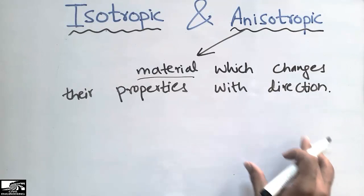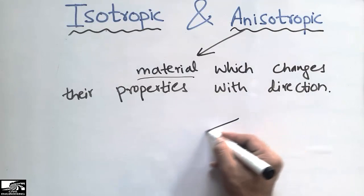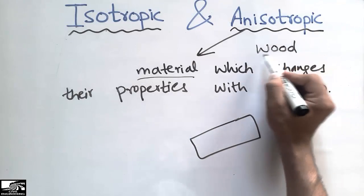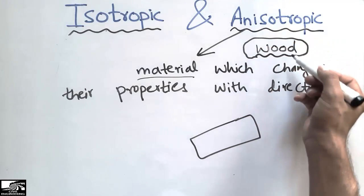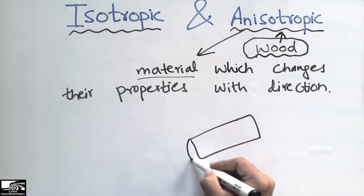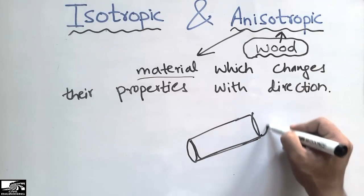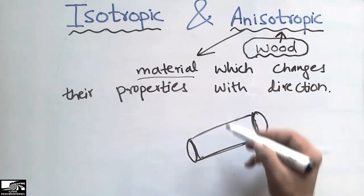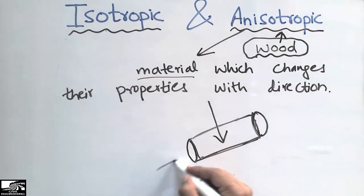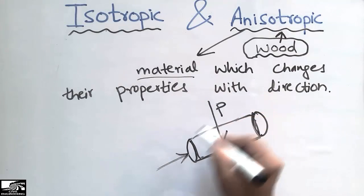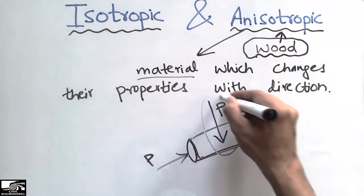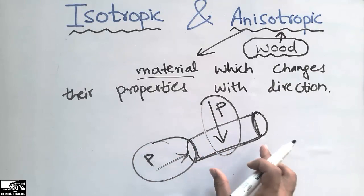A very common example of anisotropic material is wood. If we consider a wood cross-section — a circular cross-section — and apply a load in the transverse direction as well as in the longitudinal direction, these two loads show different properties. The wood shows different strength along the transverse direction and different strength along the longitudinal direction.